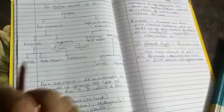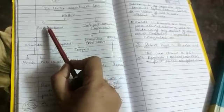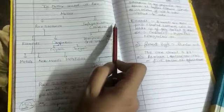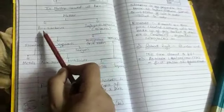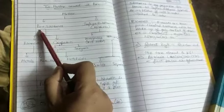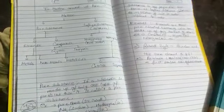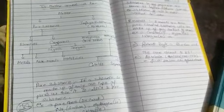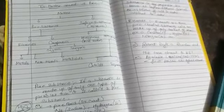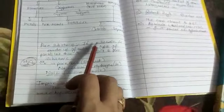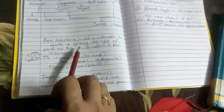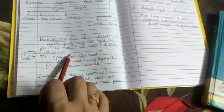Matter is classified into two categories: pure substances and impure substances, or mixtures. By the name, what do we mean by pure substances? In a general sense, we say distilled water is pure water, but chemically it is made up of two elements. If a substance is made up of only one type of particles, then it is called a pure substance — for example, pure gold.